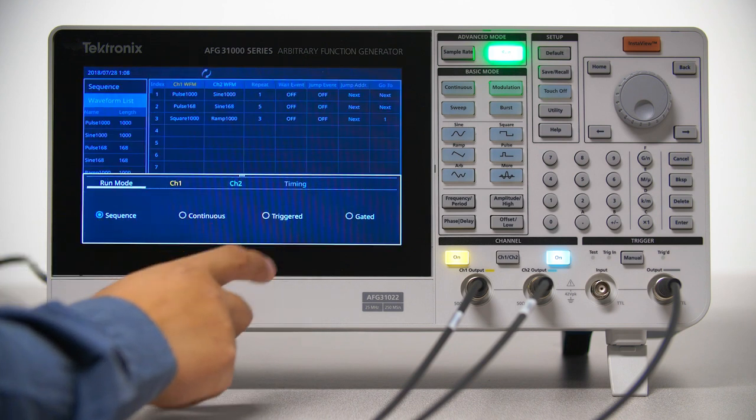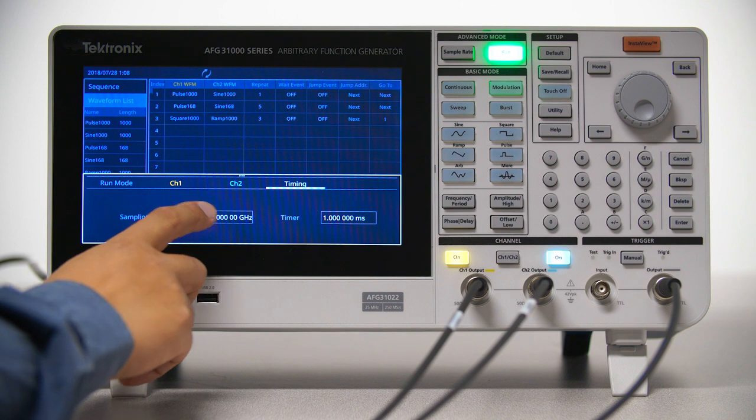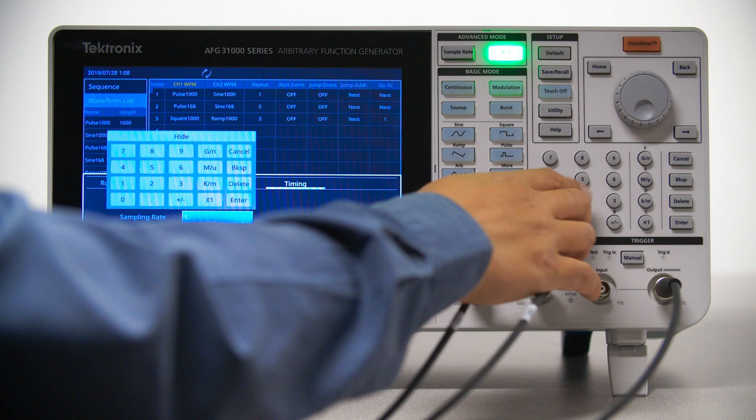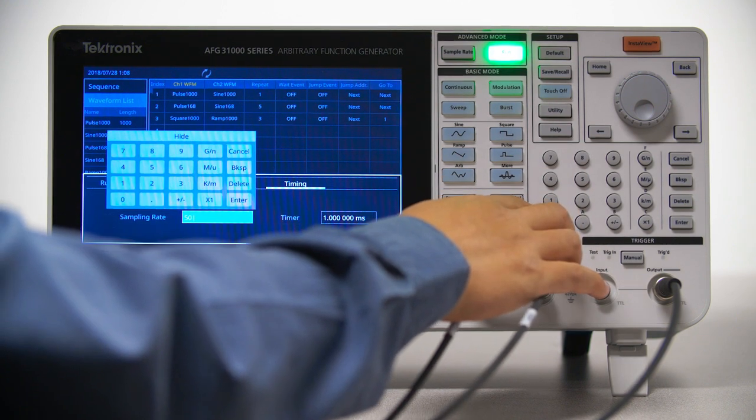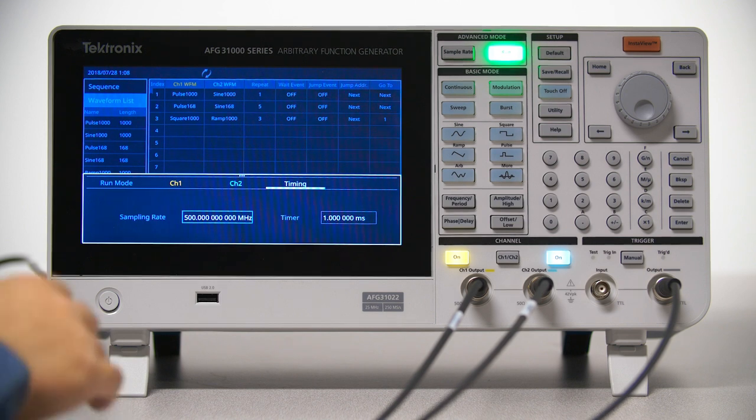You can easily change the waveform timing from the settings bar. Let's change the sample rate from 1 gigasample per second to 500 megasamples per second. This changes the output frequency to half of the original setting.